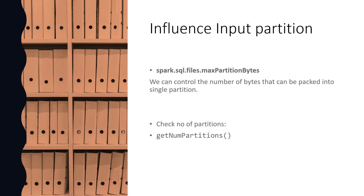Since input partition is a critical parameter for performance, how should we influence the size of the partition? There is a property in Spark called spark.sql.files.maxPartitionBytes which can control the number of bytes packed into a single partition. If you want to check the number of partitions, you can use the method getNumPartitions. You can check how many partitions are being created by default, then set the value and check again, because we want to control this to avoid too much data shuffling. The number of partitions determines how much data is shuffled, since each partition is sent to an executor.